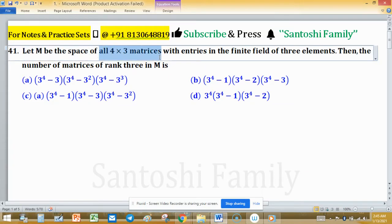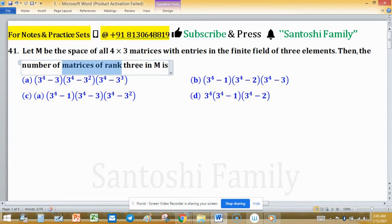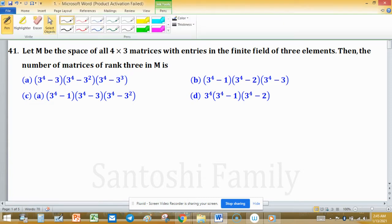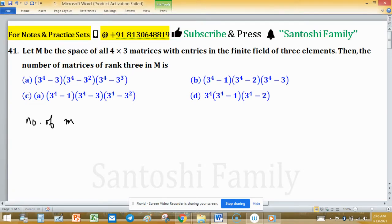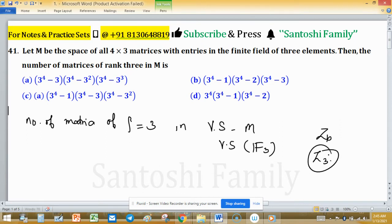Let M be the space of all 4×3 matrices with entries in the finite field of three elements. Then the number of matrices of rank three in M is—we have to find the number of matrices of rank three in vector space M. This vector space has a field of three elements, which means you can write F₃. This means three elements only, like Zₚ or you can understand Z₃, because this contains three elements.